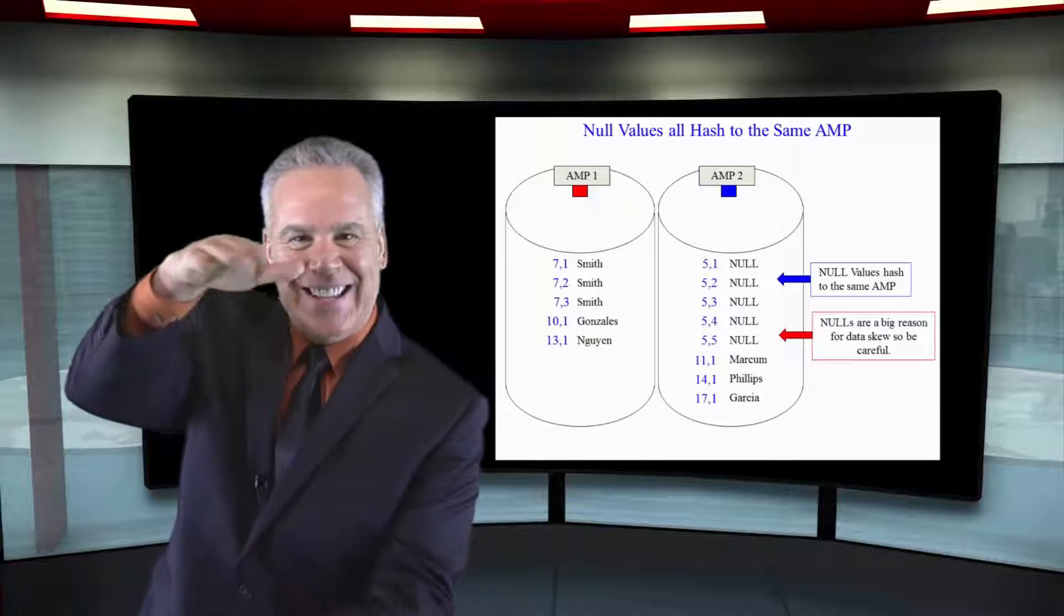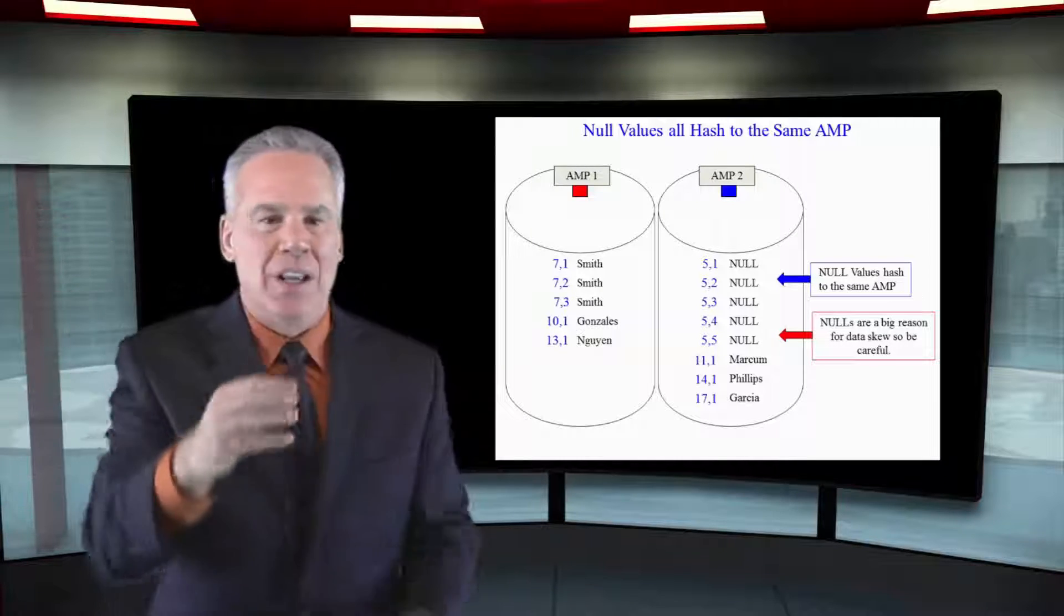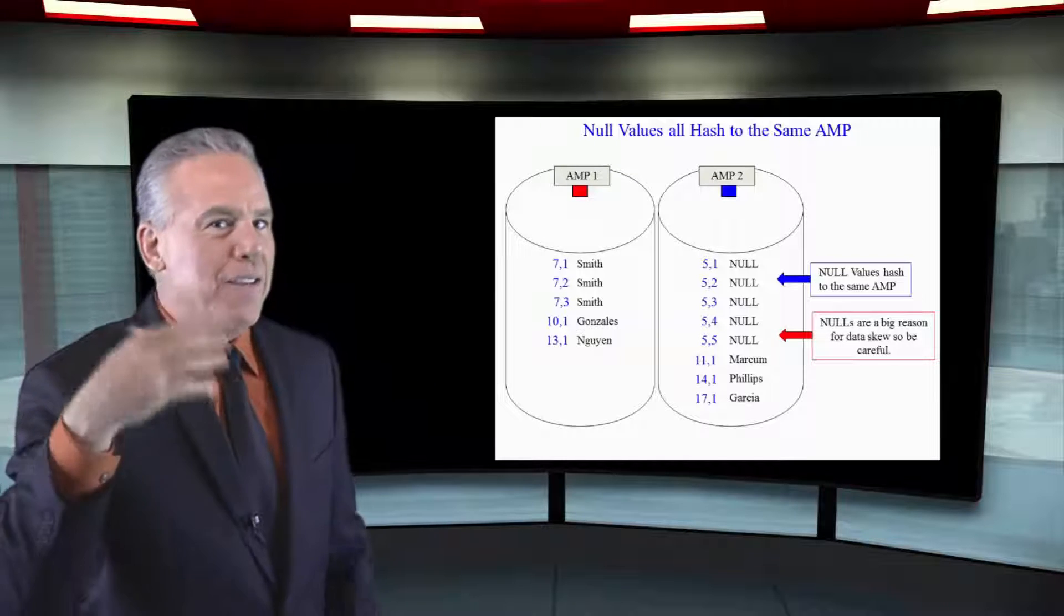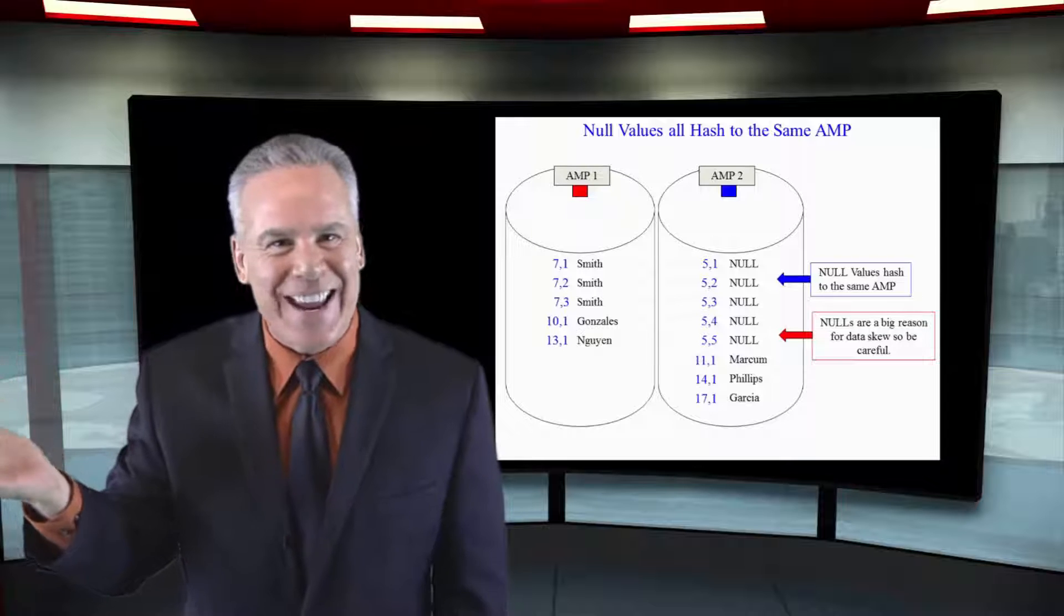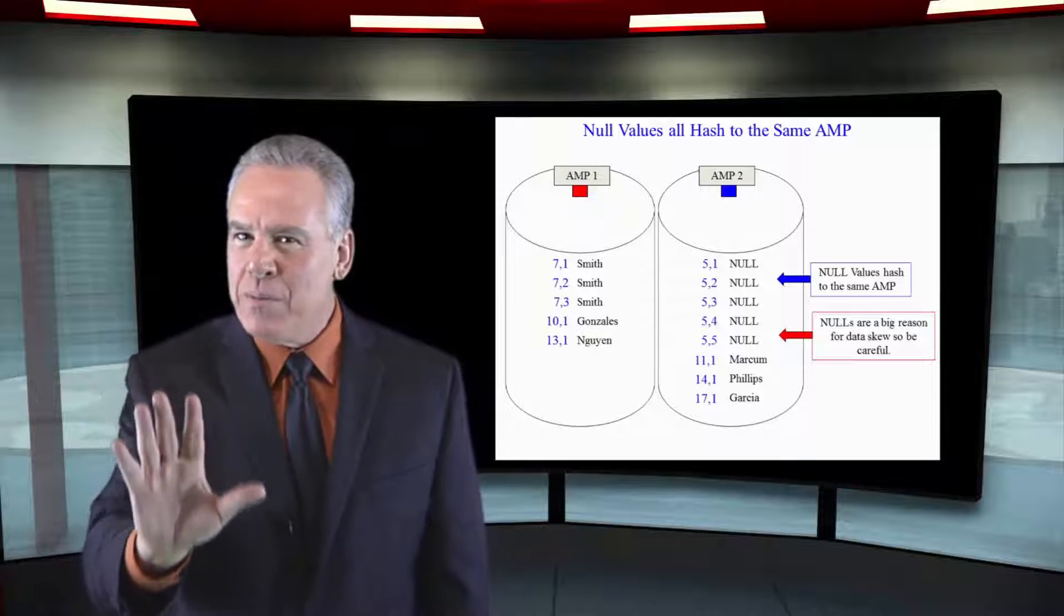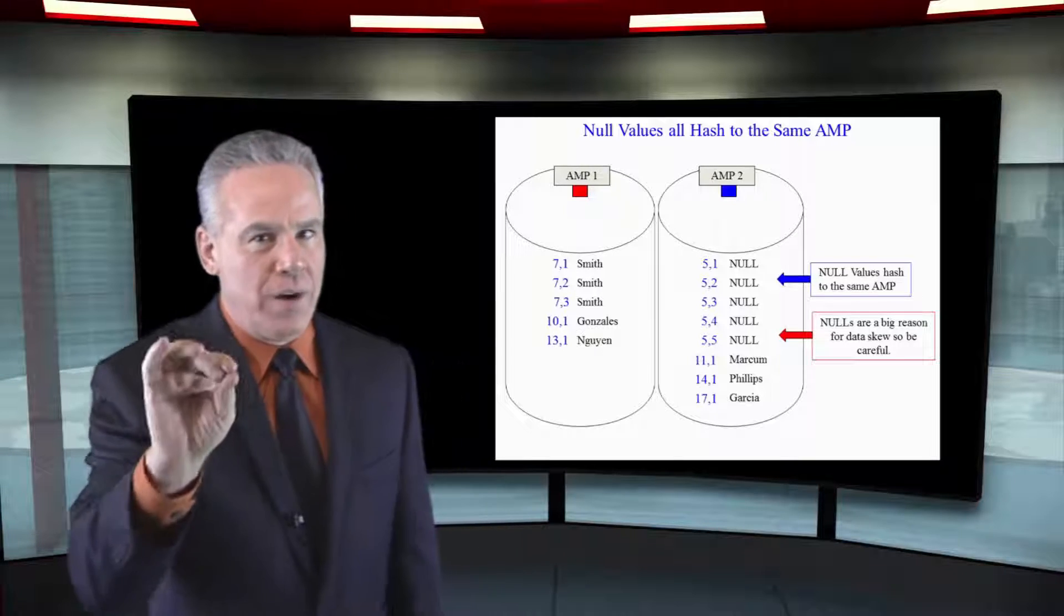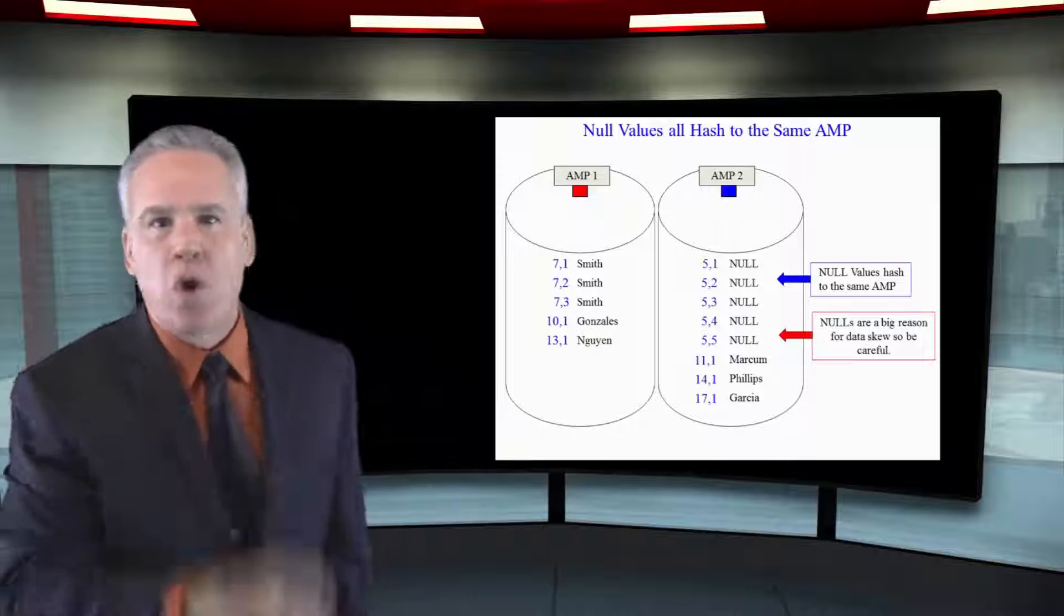Let's look at a full table scan. A full table scan is only as fast as the slowest amp. So you really have to be careful when you're picking the primary index if it has a bunch of nulls.